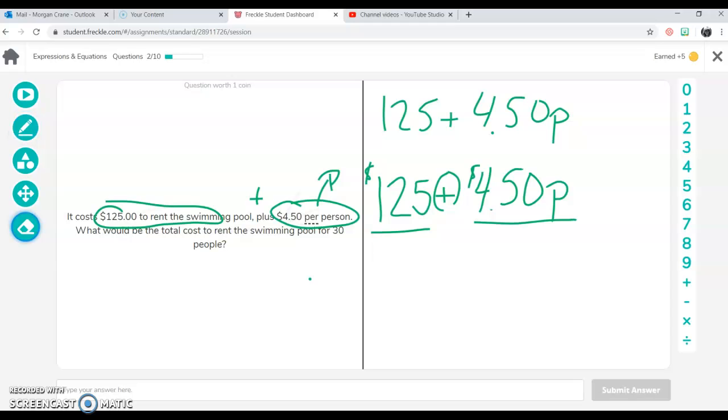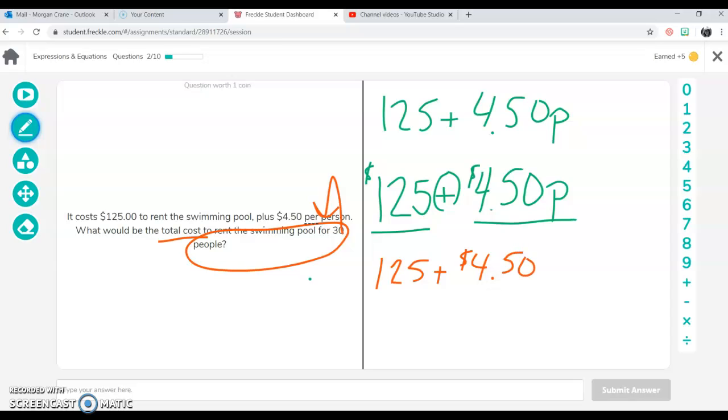Now to be able to solve it, I'm going to have to read the rest of the problem. So let's see. We have to figure out the total cost for 30 people. So now I can take 30 and input it into this part of the problem. So I keep 125 plus the 4.50 stays. Now it's going to be times 30. I'm not going to solve this. You're going to solve it on your own. But this is how you would set these problems up. I'm going to just type in a random answer.